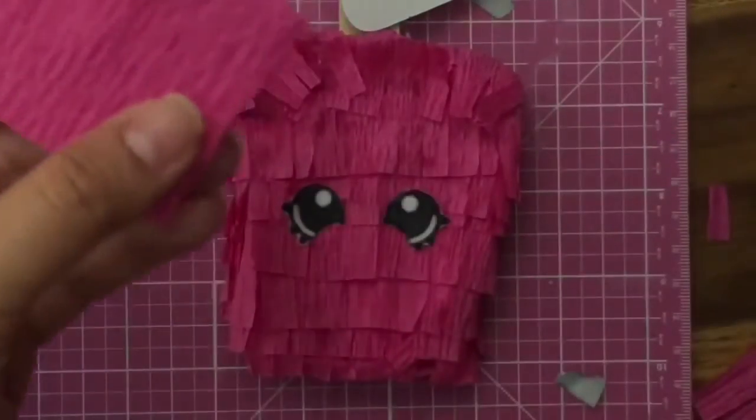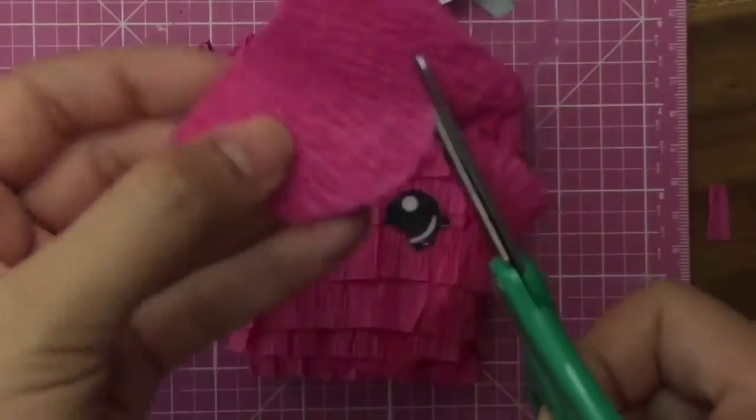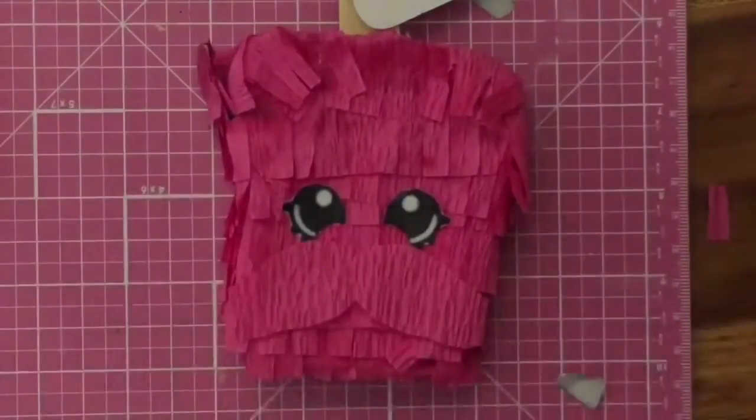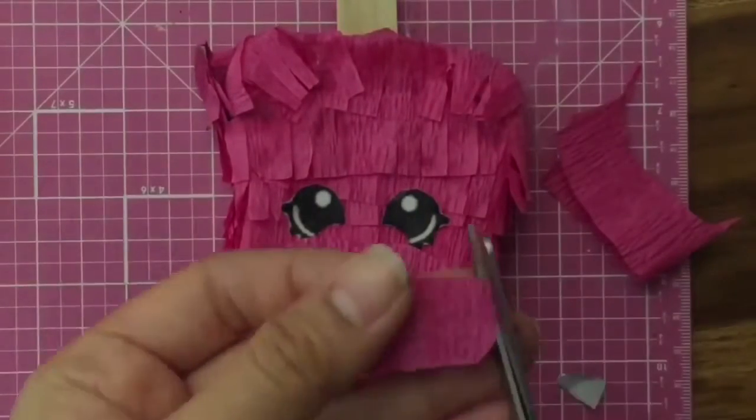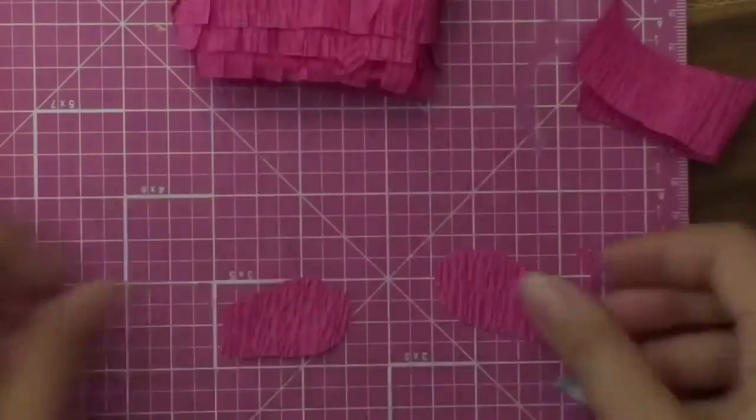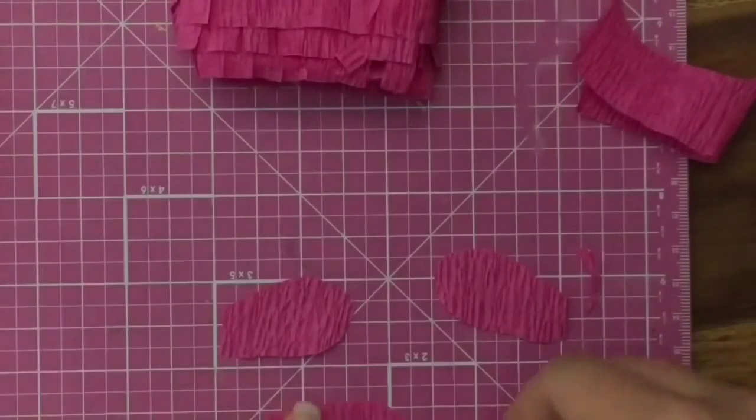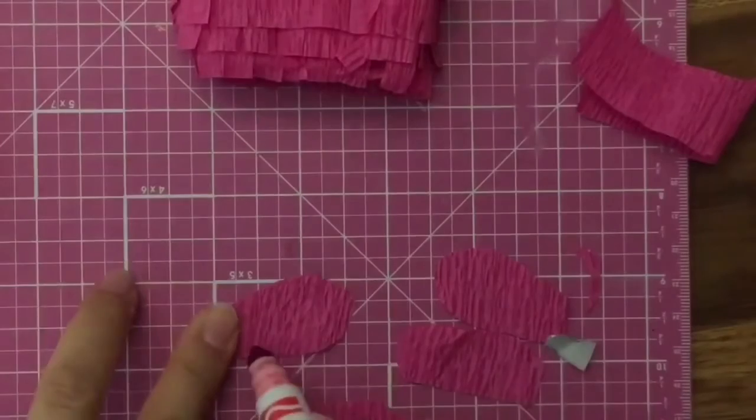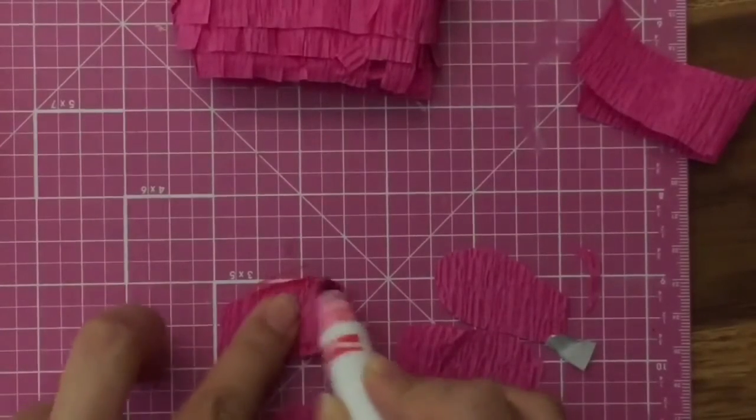But for me, it just worked easier to just eyeball it and cut it out with a scissor. To give the arms and legs some definition because it will be pink on pink on the pinata, I took a red Crayola marker and just drew around it to give it some shadow so there's some definition when you look at the pinata.